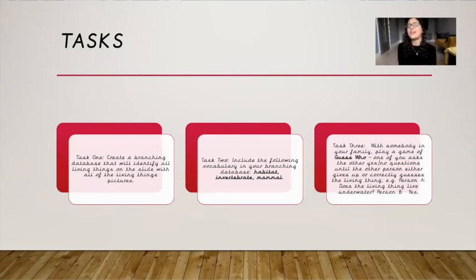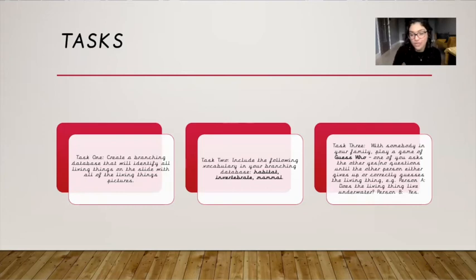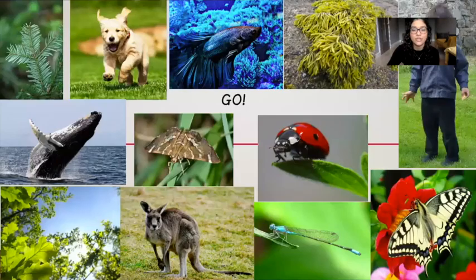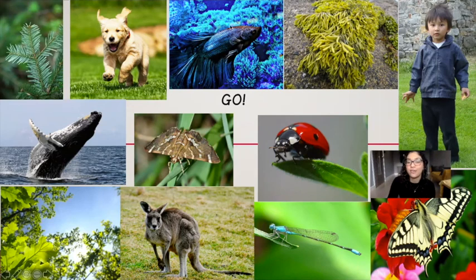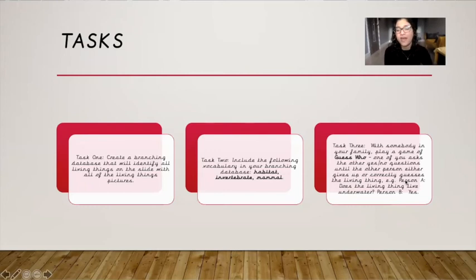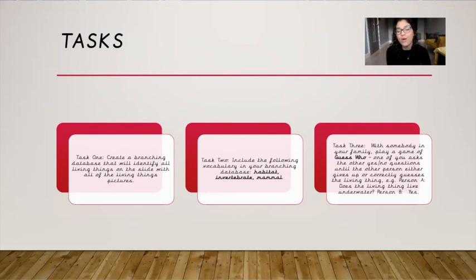Now your three tasks for today are as follows. Task number one: you are going to be creating a branching database that will identify all living things on the slide with the living things pictures. Pause the video, have those living things available, and create a branching database that will lead you to every single one of them. Task number two is to include the following vocabulary in your branching database — see if you can include the three key words: habitat, invertebrate, mammal.